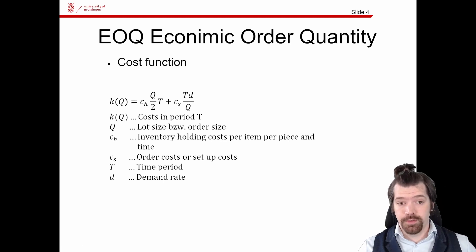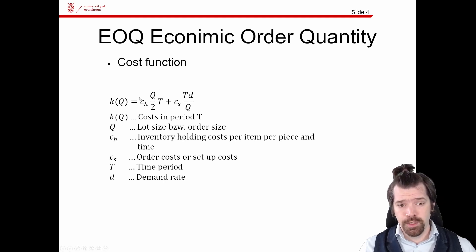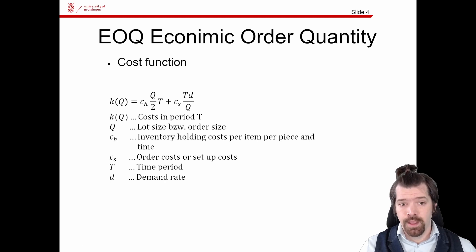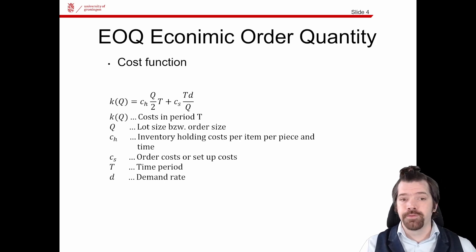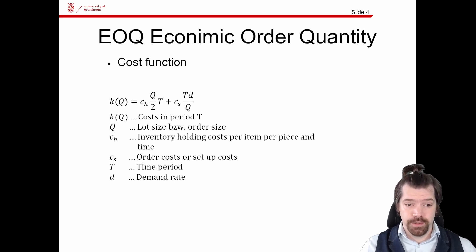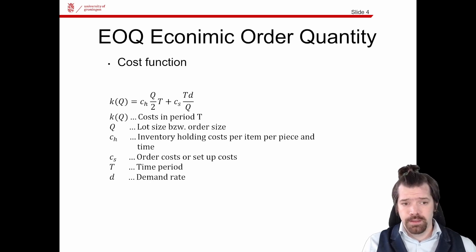This leads us to the cost function. The cost function depends only on the lot size. We have two cost blocks: the holding costs and the order costs, or setup costs. The holding costs depend on half of the lot size multiplied by the period T. On the other hand, we have the order costs or setup costs per setup, and we define how often a setup occurs during the observed period, which is indicated by the demand divided by the lot size, multiplied by the time period.